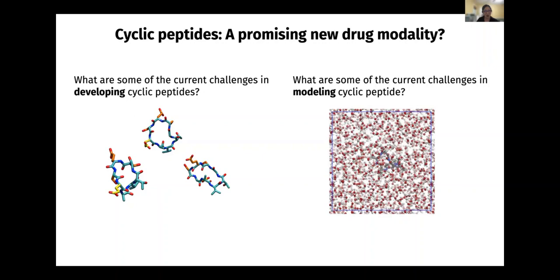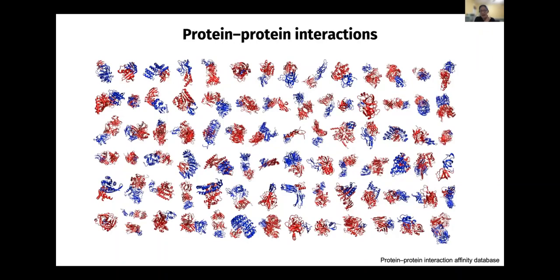I want to discuss why it is currently very challenging to develop cyclic peptides, and what are some of the current challenges in modeling cyclic peptides. I'll use an example of protein-protein interactions. In each of these pictures, blue is a huge protein and red is another huge protein that come into contact, trigger conformational changes, and the signal gets processed. Protein-protein interactions are very prevalent in biology, and a lot of them are upregulated in disease.